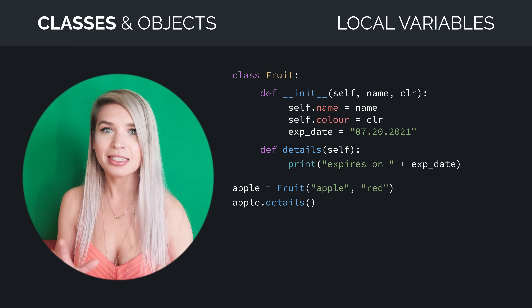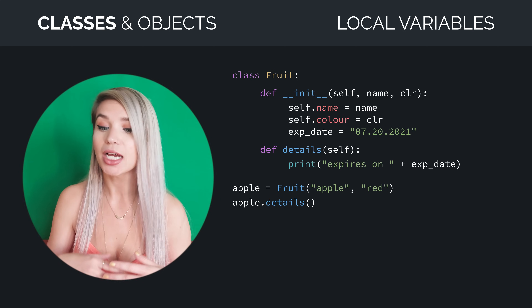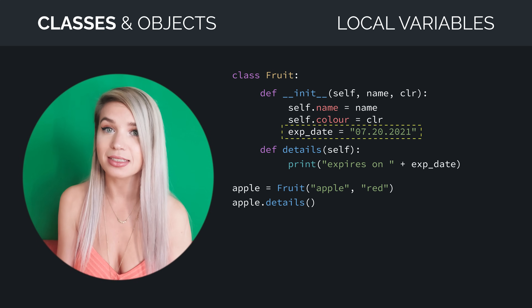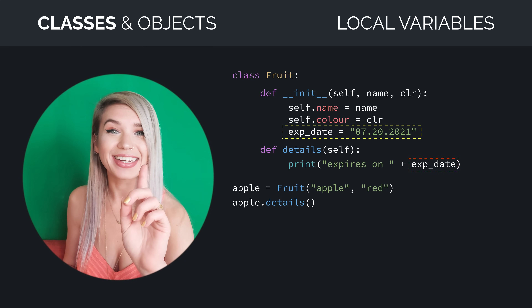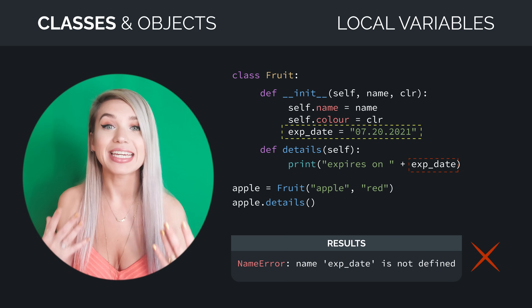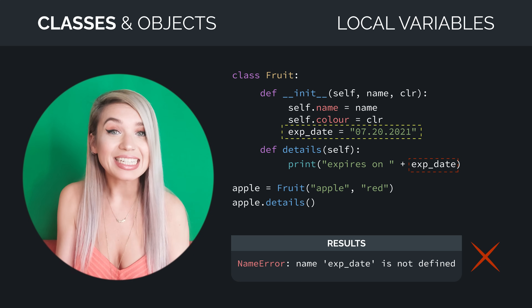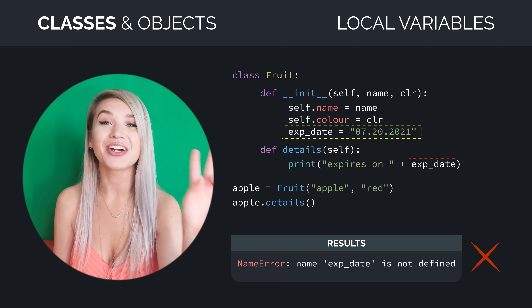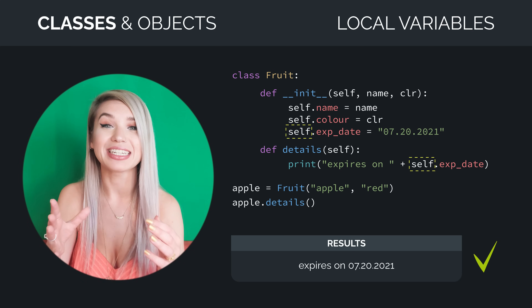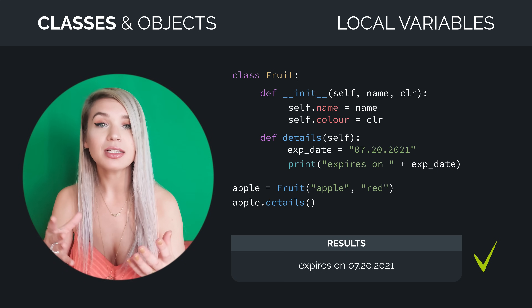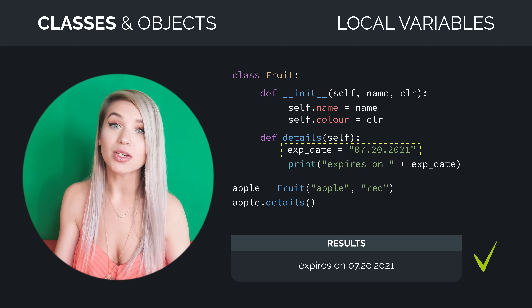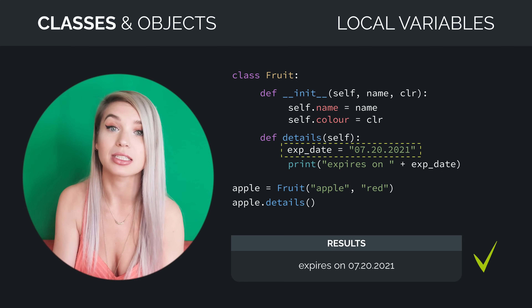Now let's have a look at a common mistake. Let's say we completely forgot about the self parameter and we have initialized a new variable called expiration date inside init. Whenever we try to access this variable with our details method, we get a name error. The reason why we get this error is because expiration date is a local variable of init, and because it is local, it is not global, so details knows nothing about it. There are two different ways to solve it: we can either add the self parameter in front of expiration date and turn it into an attribute, or alternatively we can leave it as a variable but initialize it inside details rather than inside init, and that way we can avoid all the scope issues without turning expiration date into an attribute.